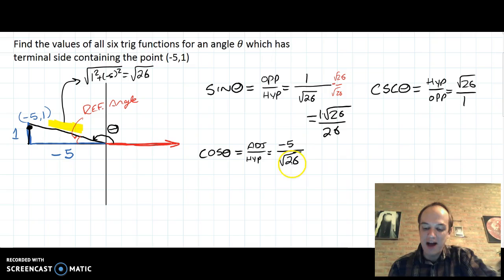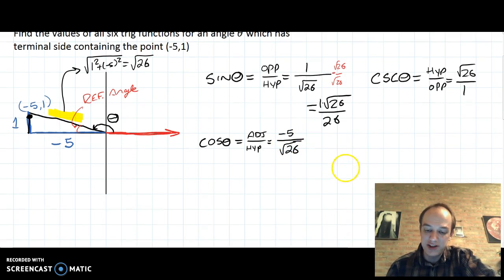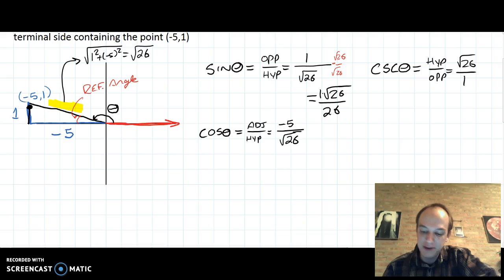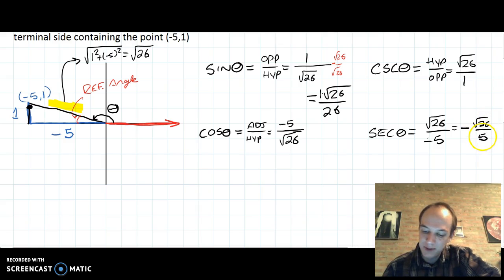I know that this isn't rationalized yet, but I'm going to do the reciprocal function next and then come back and rationalize in a second. So the reciprocal of cosine is secant. So secant of theta will equal the square root of 26 over -5. It's kind of weird to leave that negative on the bottom. So one way that we often write it is just leave the negative out front, -√26 divided by 5. Now we'll go back and rationalize this. If you rationalize, this is the same as -5√26 divided by 26.